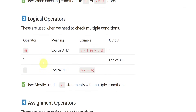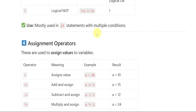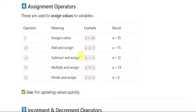Then we have logical operators — as we have seen: AND, OR, NOT. AND means when we use double ampersand (&&). OR means when both are true, the result is true. NOT negates the value. Logical operators are mostly used in if statements with multiple conditions.